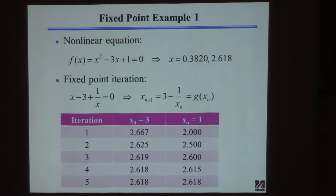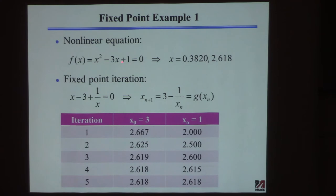One thing you can do is try a different equation — a different algorithm for the same equation — because it's not unique. I divided through the equation by x to get a new form, then moved terms to the right-hand side, evaluated everything on the right at n and the left at n plus 1. That's a new equation.